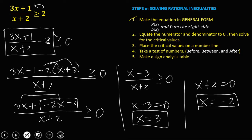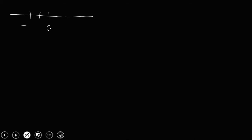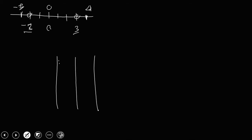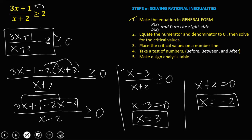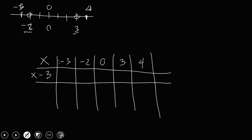Place the critical values on a number line: we have 0, negative 2, and positive 3. For test numbers: before negative 2, use negative 3; between, use 0; after positive 3, use positive 4. In the sign analysis table with x values negative 3, negative 2, 0, 3, and 4 — numerator is x minus 3, denominator is x plus 2. Substituting critical values: if x equals negative 2, then negative 2 plus 2 is 0 denominator — error. If x equals positive 3, then 3 minus 3 is 0 numerator — that's 0.